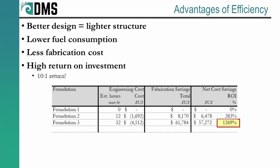But even better, those savings come relatively cheap. The table on your screen compares the cost savings against the engineering effort required to achieve them. In this sense, engineers are cheap. Foundation number three showed a return on investment of over a thousand percent. Imagine getting a 10 to 1 return on your investments. When it comes to structural foundations, engineering optimization is a good bet for savings.